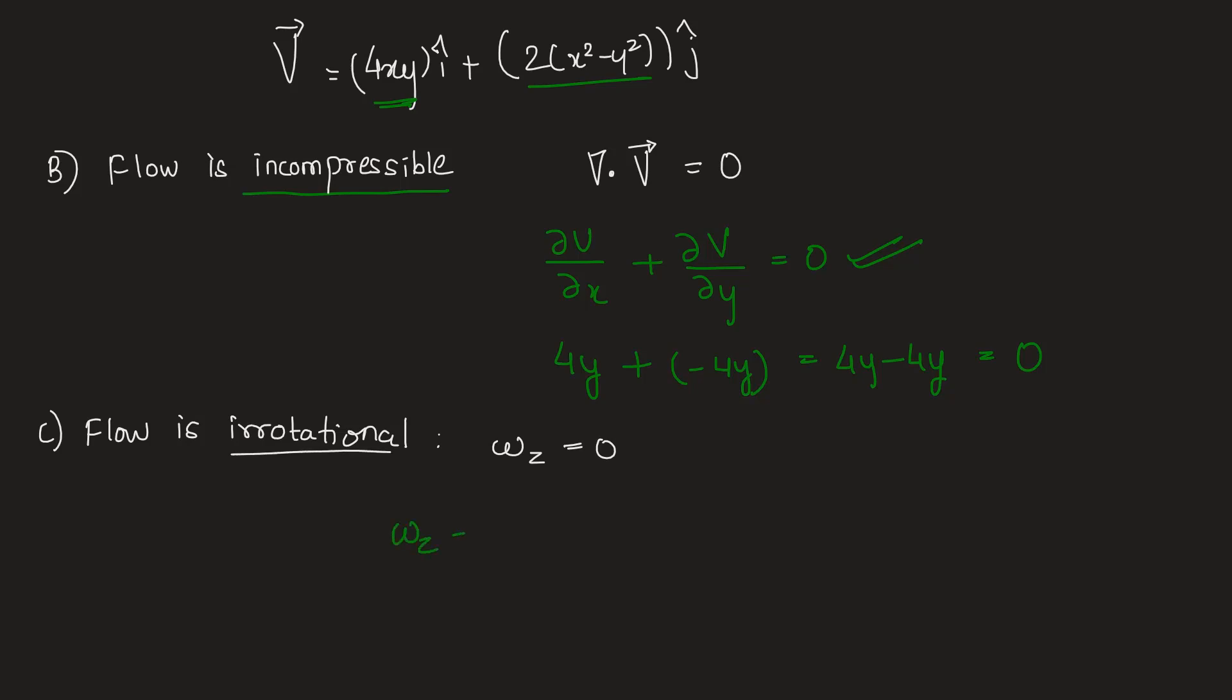Omega z will be equal to half times the variation of velocity in perpendicular direction. So we take variation of component v in x direction and variation of u in y direction. This equals half into partial derivative of v with respect to x, which is 4x, minus partial derivative of u with respect to y, which is also 4x. 4x minus 4x is zero. We see that angular velocity in z direction is zero, and therefore flow will be irrotational.